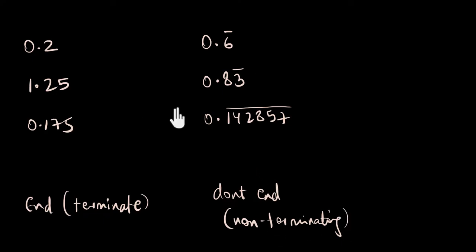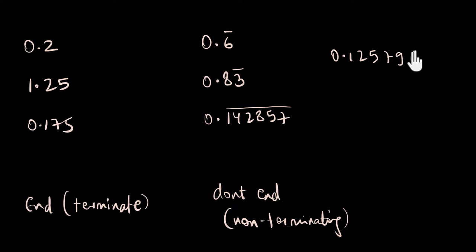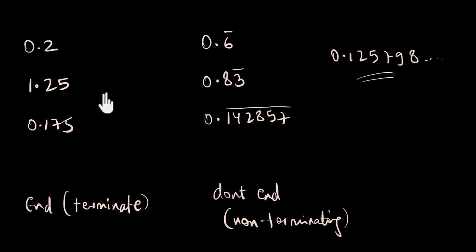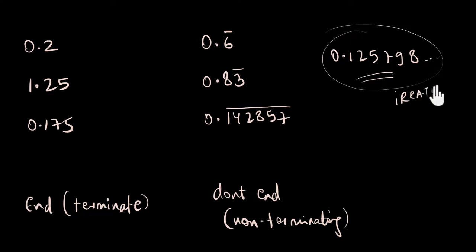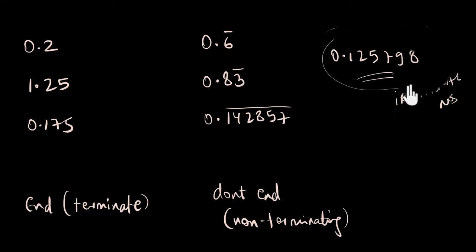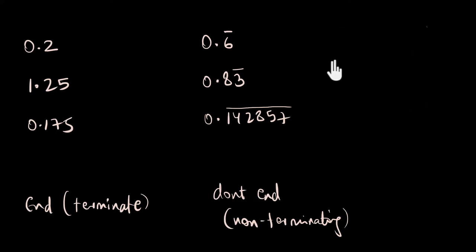Is there any other type of decimal? Well, there's one type that doesn't end and is also not repeating — like 0.125798... with no clear pattern. But we don't need to consider these, because we're looking for a relation between fractions and decimals, and these are actually irrational numbers — they don't give us a fraction. So let's ignore them and only look at the terminating and repeating decimals.